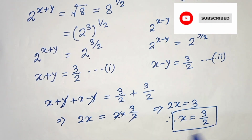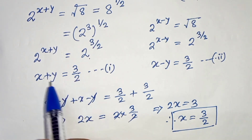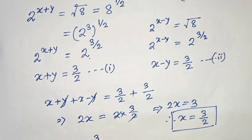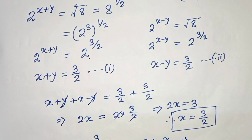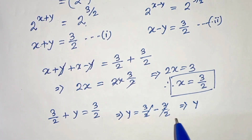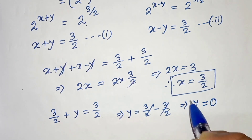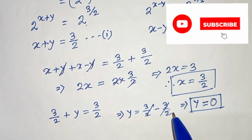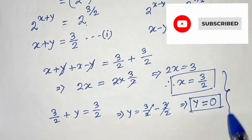This is our first solution. Now putting x equals to 3 by 2 into equation 1, we will get 3 by 2 plus y equals to 3 by 2. Therefore y equals to 3 by 2 minus 3 by 2, so y is equals to 0. This is our other solution. So x equals to 3 by 2 and y equals to 0 is our final solution.